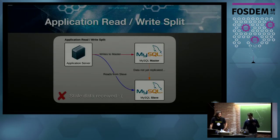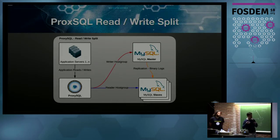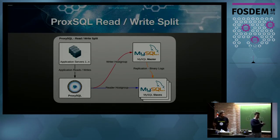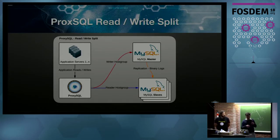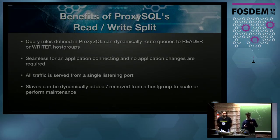Typically an application will write data to a master. That data may or may not have been replicated to the slave. The application will then have to connect to the slave and read that data if we're doing a read-write-split. Stale data can be received — this makes our developers unhappy. With ProxySQL read-write-split, we overcome the problem of maintaining separate connections to masters and slaves, because we have the concept of reader and writer host groups. The application can just blindly send all requests — reads and writes — to ProxySQL.